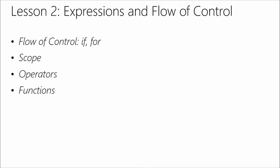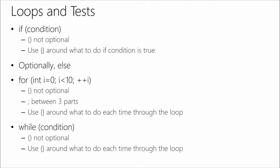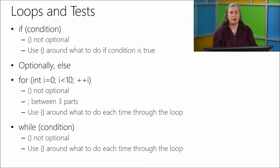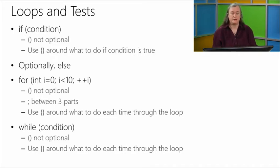Let's start with flow of control, specifically with two keywords in C++ called if and for. This is standard for any application you're going to write — you're going to have decisions to make. If you're writing a game, you need to say: if the character's hit points have gone below zero, then draw him falling down dead. The syntax in C++ is lowercase if, round brackets or parentheses — they're not optional — and then your condition. After the if, you can have an open brace, what to do if that condition is true, and a close brace. After the close brace, you may have an else — another all-lowercase keyword — an open brace, what to do when the condition is not true, and then a close brace. You don't have to have an else.